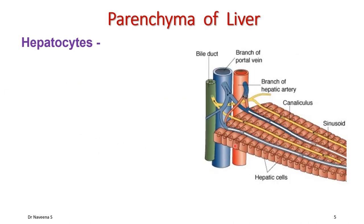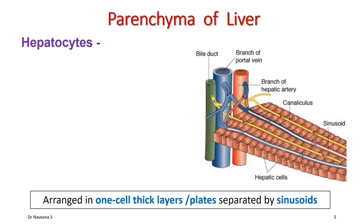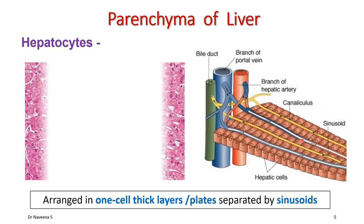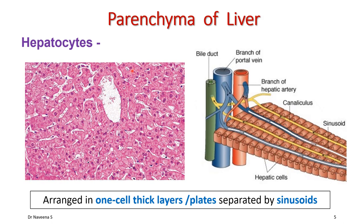Hepatocytes are arranged as one-cell-thick layers or plates of liver cells, which are separated by sinusoids. In H&E stained liver tissue, hepatocytes are arranged as single cellular plates that anastomose with each other and are separated by larger gaps known as sinusoids.